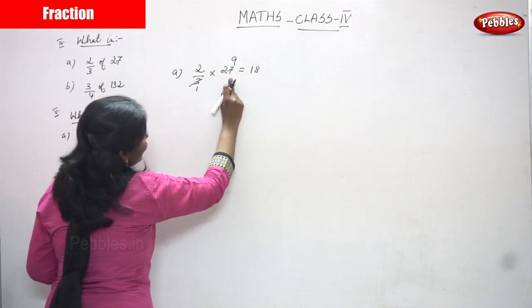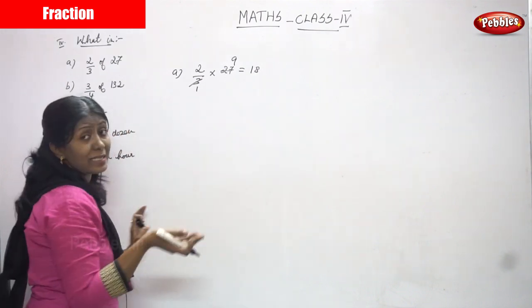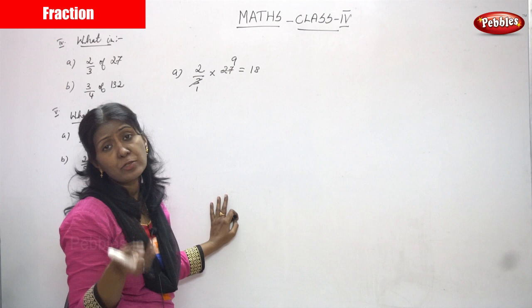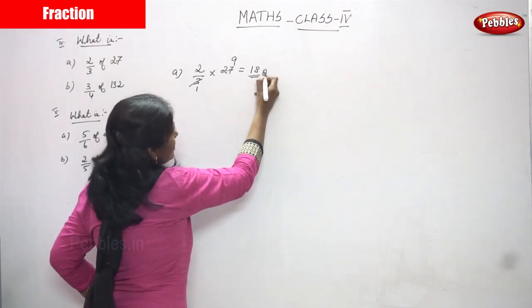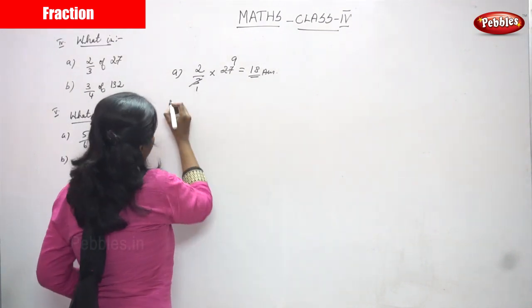You must use the 9 times table or 2 times table. I am using the 9 times table here — 1 nine is 9, 2 nines are 18. So the answer is 18. You can get 18 parts.